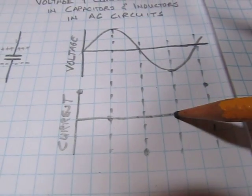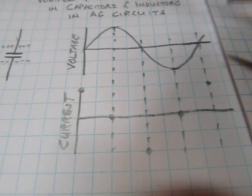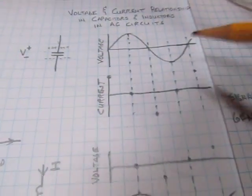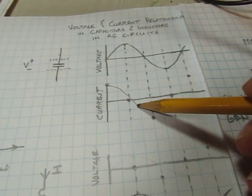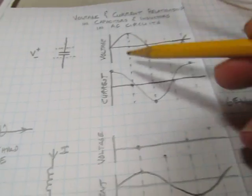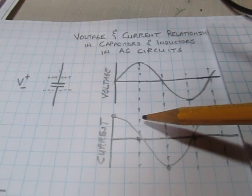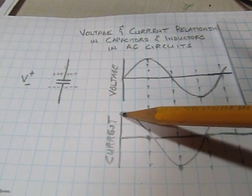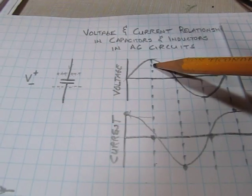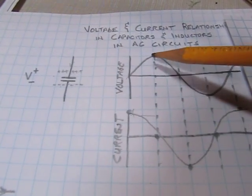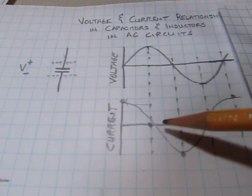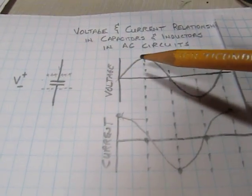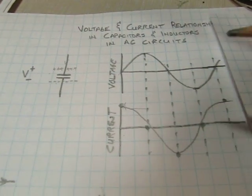Connecting those dots gives us a plot that looks like a sine wave, but shifted over. The peak of the current waveform is occurring before the peak of the voltage waveform. So we say that the current is leading the voltage in a capacitor.